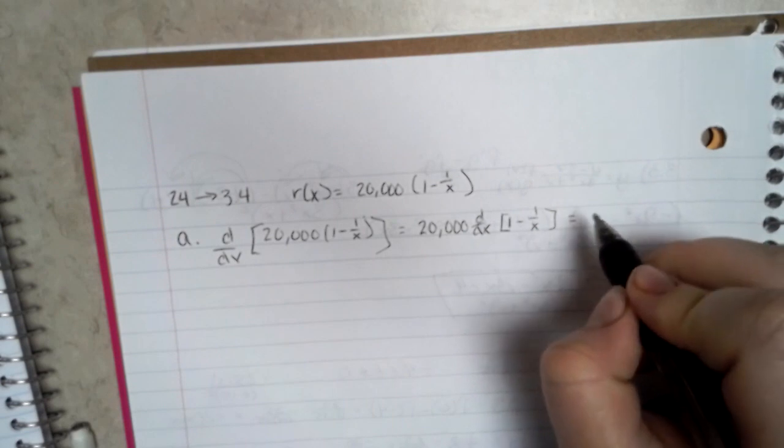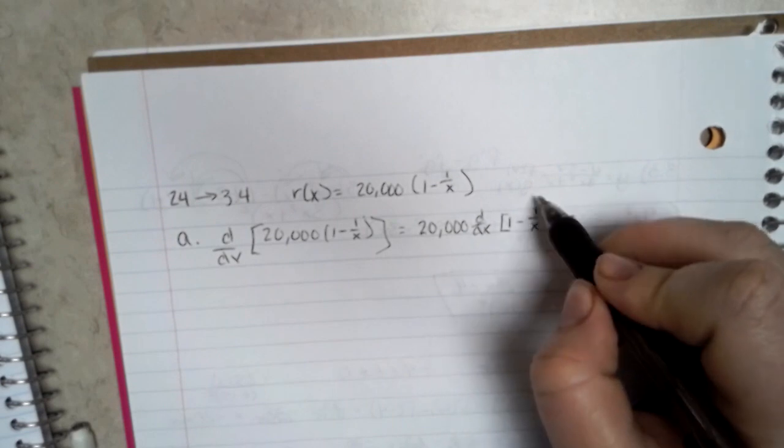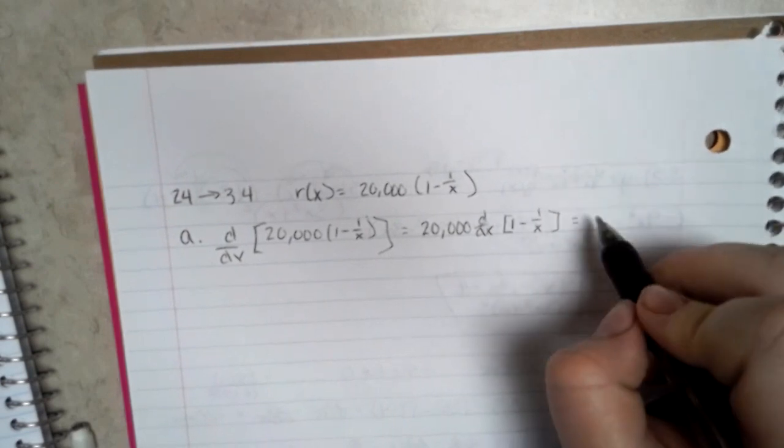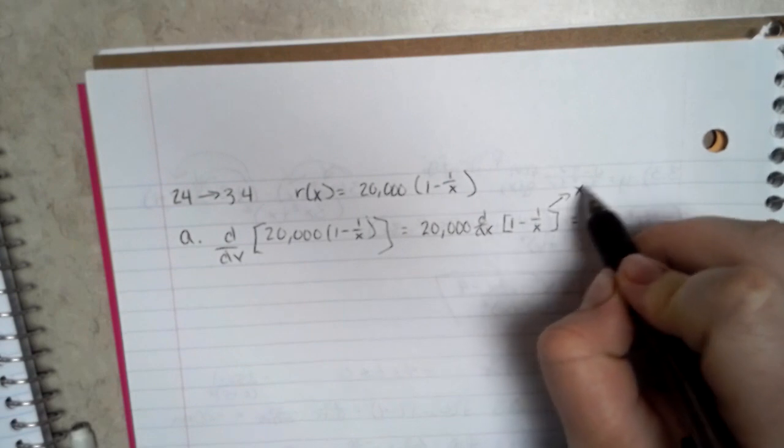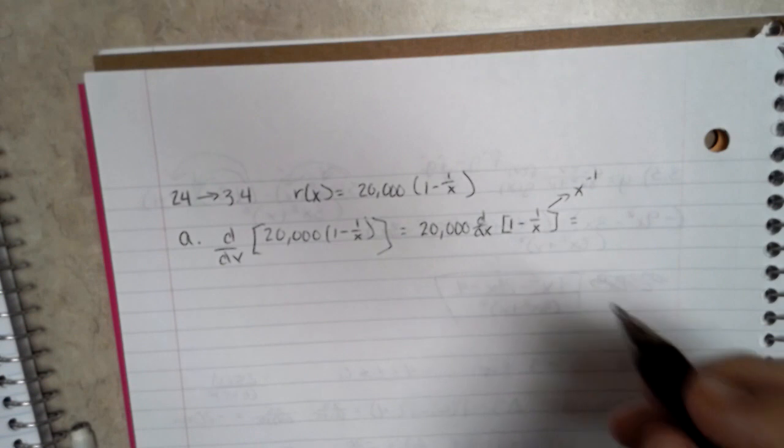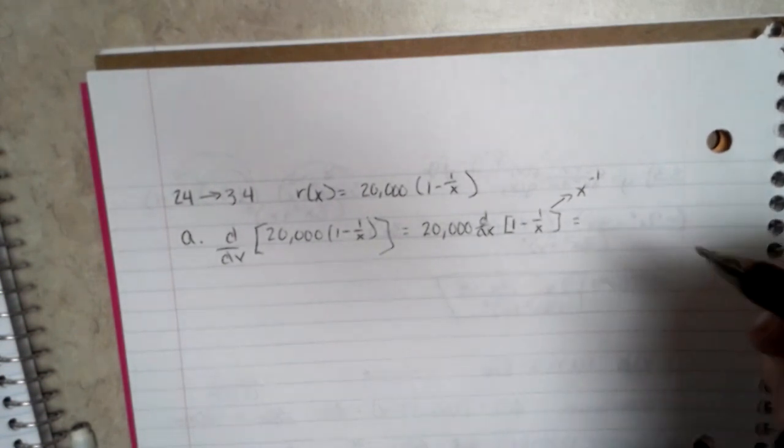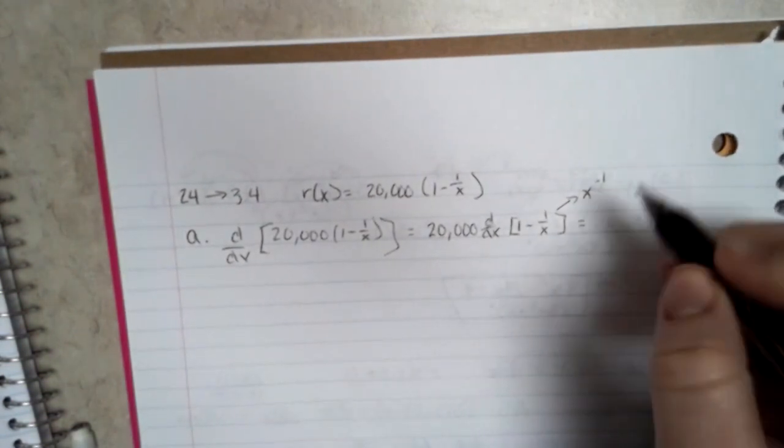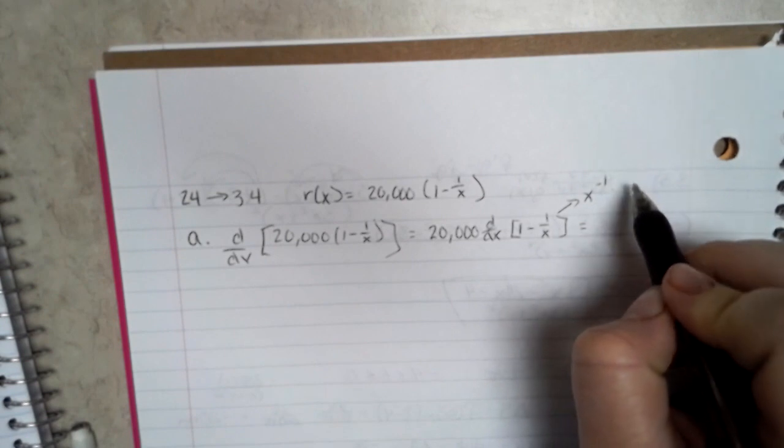And then from there, your 1 over x, you rewrite as x to the negative 1. And so doing the power rule, when you do this, you're going to come out with negative x to the negative 2.